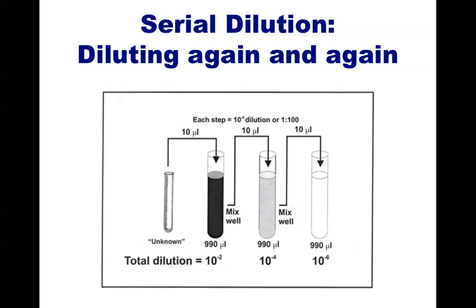A great way to practice the concept of concentrations and dilutions is to perform a serial dilution. When thinking about a serial dilution, it might help to remember that a serial killer is somebody that murders the same way every time. In much the same fashion, a serial dilution is when you make a repeated dilution. When you make a dilution, you are taking a small amount of a concentrated solution and adding it to a less concentrated solution, or just plain solvent.